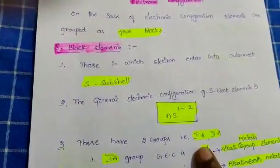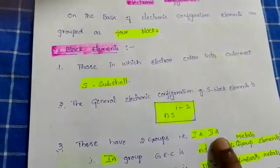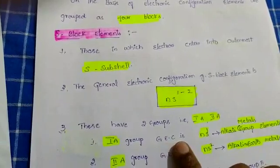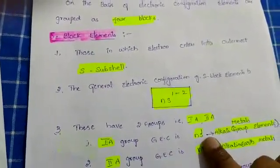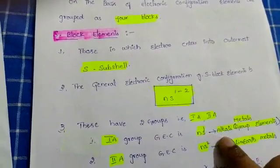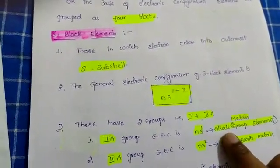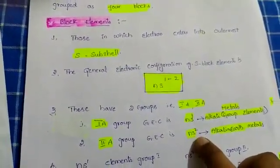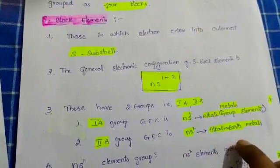S-block elements contain two groups: 1A group and 2A group elements. 1A group elements have general electronic configuration NS1. These are also called alkali group elements. And 2A group elements have general electronic configuration NS2. These are also known as alkaline earth metals.